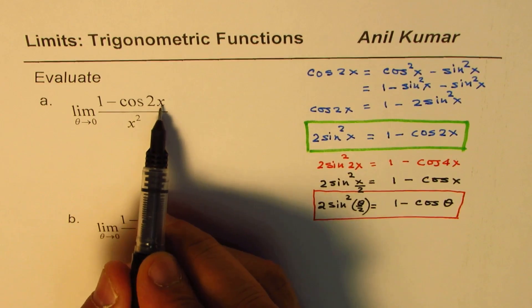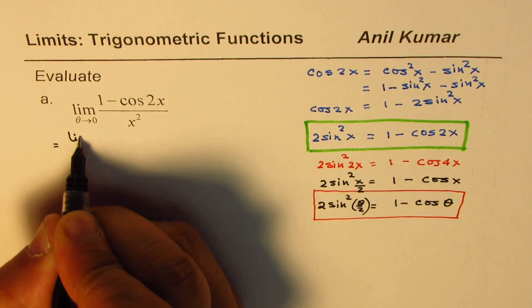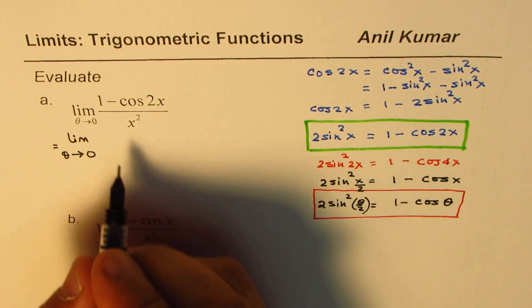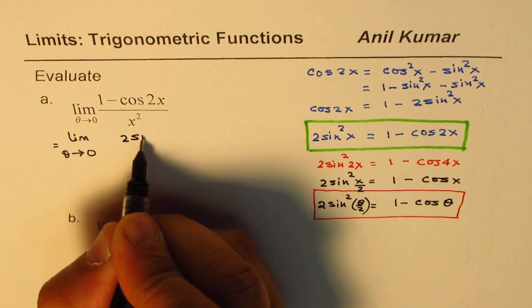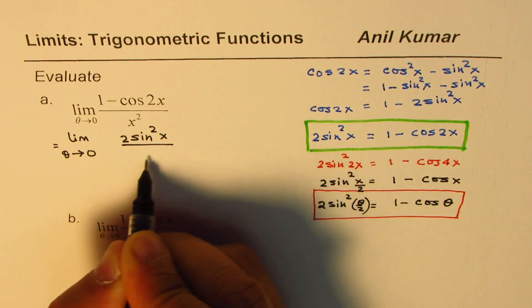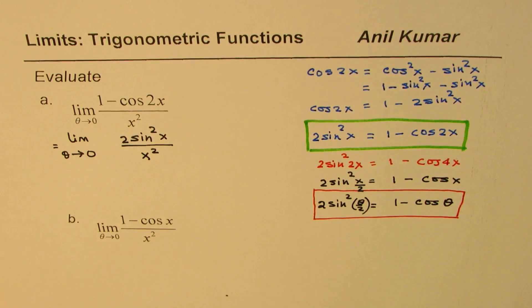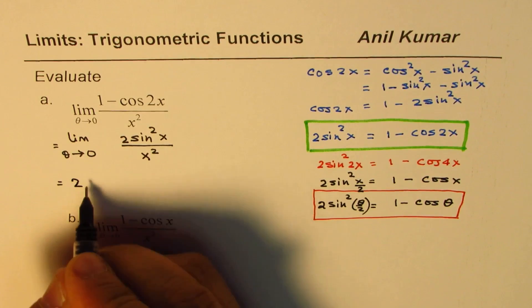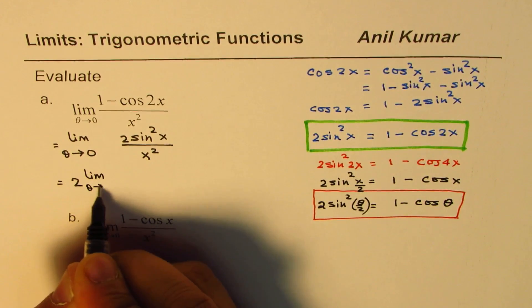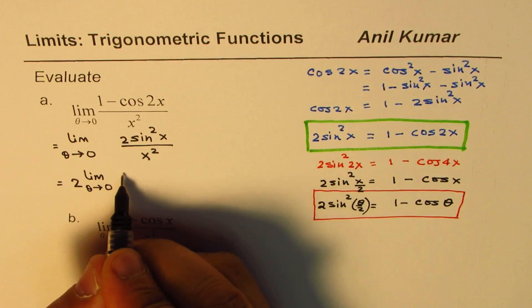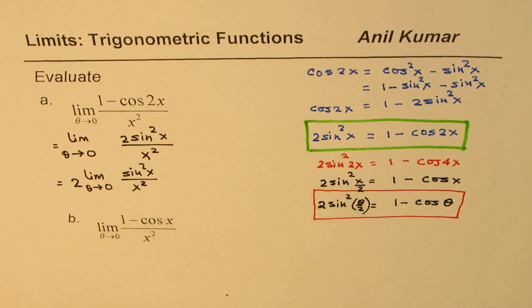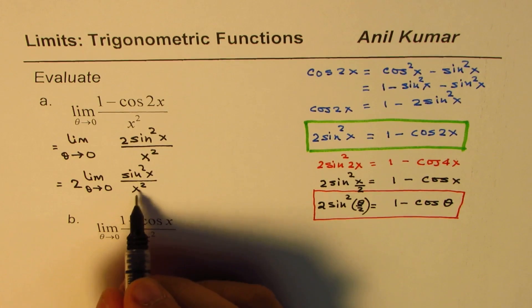So 1 - cos 2x could be written as limit as x approaches 0 of 1 - cos 2x is 2sin²x. We will write 2sin²x over x². Now 2 is a constant, so I could write 2 here. So we can write this as 2 times limit x approaches 0 for sin²x over x². Can you find the limit now?